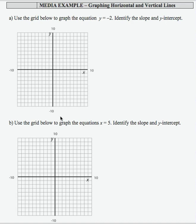Here we're asked to use the grids to graph the equations y equals negative 2 and x equals 5. So let's take these one at a time.